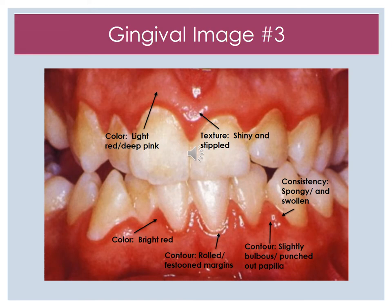The color for this gingiva is still red, but we see some areas of a lighter red to pink. The texture, once again, is shiny and stippled. The consistency is swollen and spongy. For the contouring, there is punched out papilla that is more bulbous, with rolled and festooned margins. The brighter red is seen more on those rolled margins in the interior aspect.